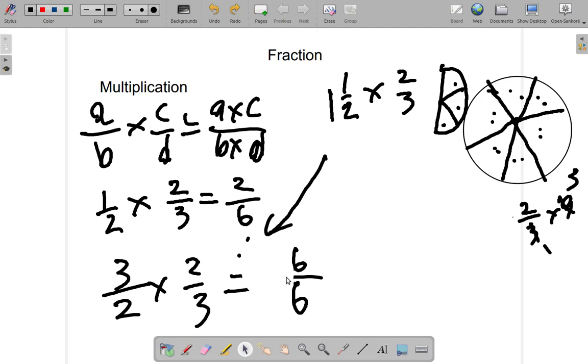If you are given one of the fractions as a mixed fraction, like one and a half, you turn it into an improper fraction. We did that in an earlier video. And then you multiply that improper fraction by the other fraction. Again, top by top, over bottom by bottom. And you will get your answer. That's it for now.